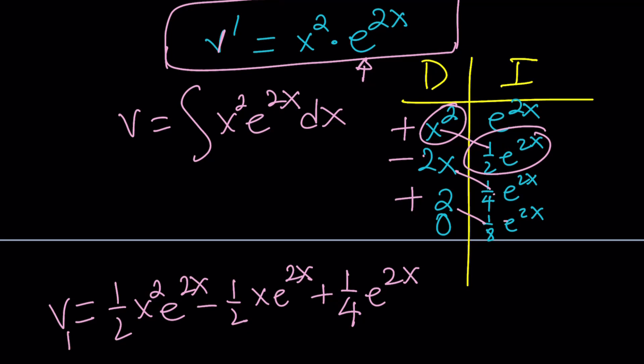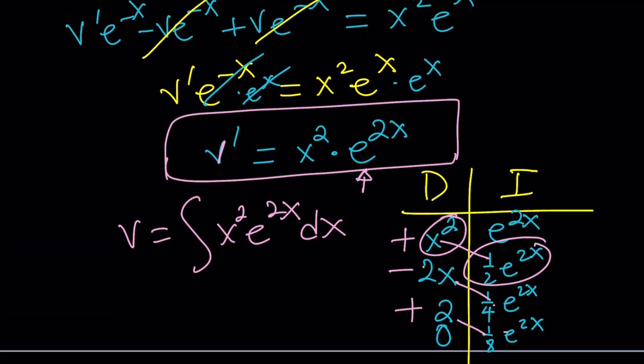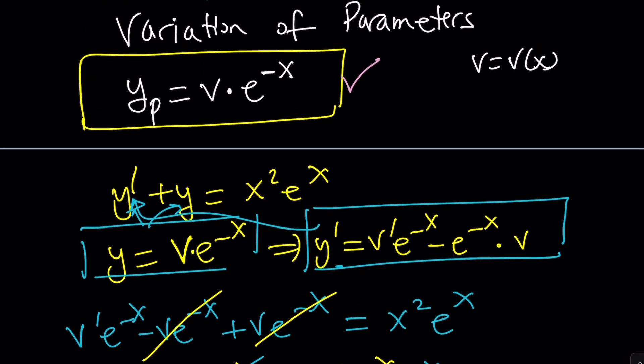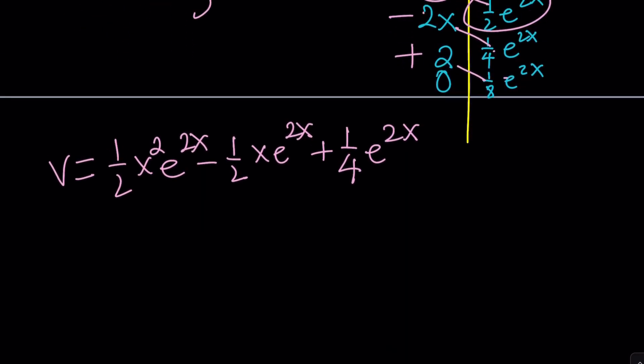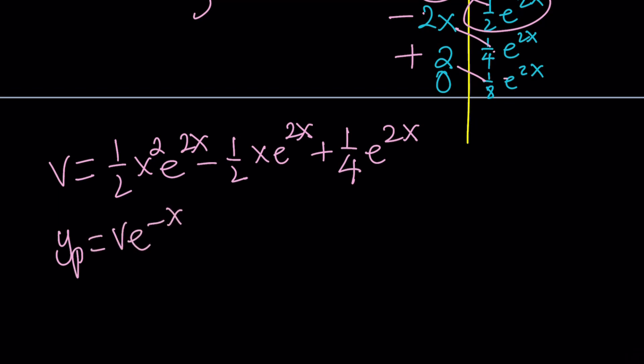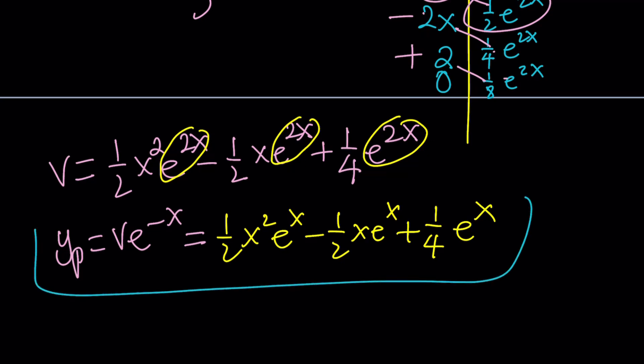So this is my v. But what is our particular solution? v multiplied by e⁻ˣ. So yₚ is ve⁻ˣ by our assumption, remember? Variation of parameters. And then you're going to multiply everything by e⁻ˣ. So the exponent is going to be reduced to eˣ, right? It's going to be (1/2)x²eˣ - (1/2)xeˣ + (1/4)eˣ. Obviously you can factor out some stuff, but I'm not going to deal with that. But this is yₚ. We found the particular solution.